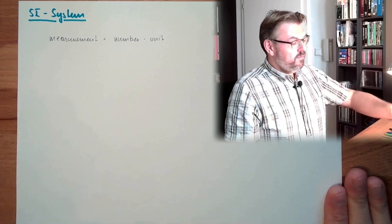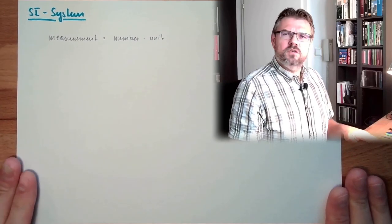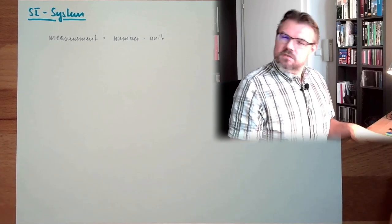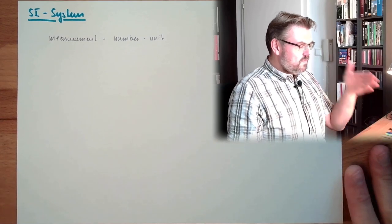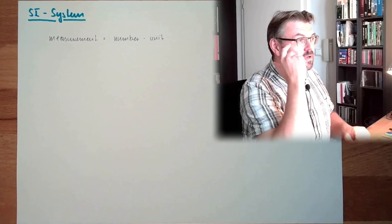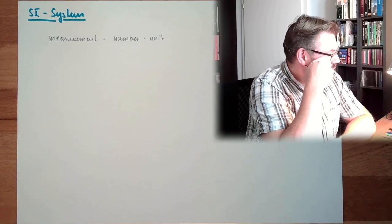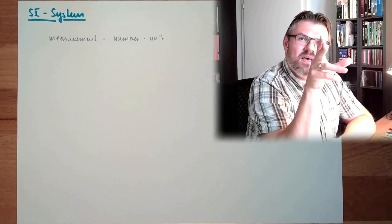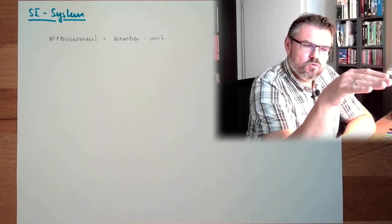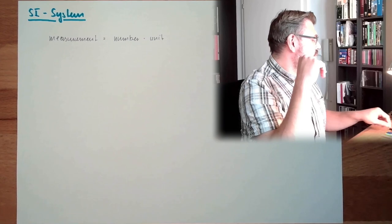So people came up with the SI system, System International. It's French. I don't speak French. What is the SI system? People thought, what are base units? And they came up with the idea that seven base units are sufficient to describe our world. These are called so-called base units. So we have our SI system consists of seven base units.